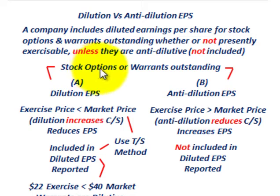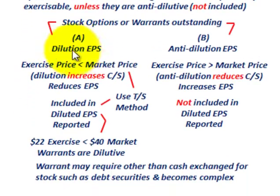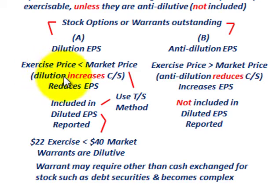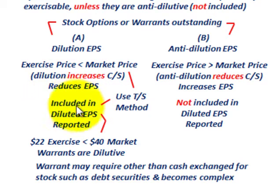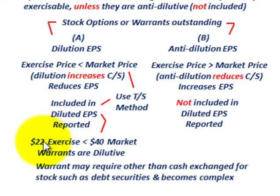For diluted earnings per share, this is where the exercise price on the warrant would be less than the market price on our common stock. Assuming these warrants would be exercised, there would be a dilution — that would increase the number of common shares outstanding, because you'd have to issue more common stock when these warrants were exercised, which would reduce earnings per share. In this case, it would be included in diluted earnings per share and involves the treasury stock method. In our example, the exercise price is $22 and the market price is $40, so the exercise price is less than the market price — the warrants are dilutive.